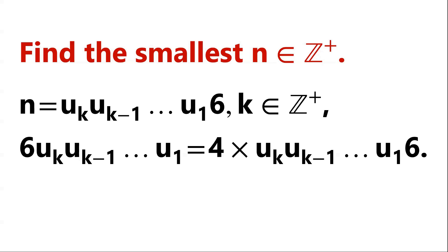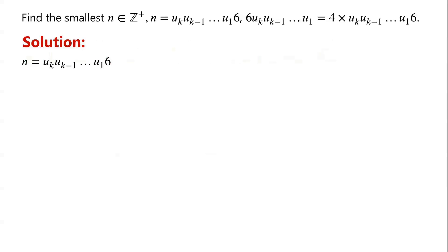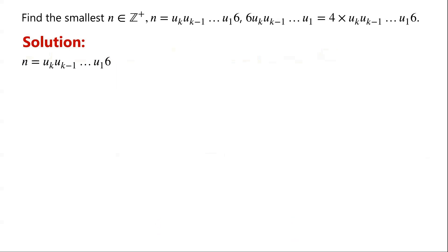As we do not know how many digits the number has, we assume that n has k+1 digits, where k is a positive integer. So n can be written as u_k, u_{k-1}, ..., u_1, 6, where u_k, u_{k-1}, ..., u_1 are digits.